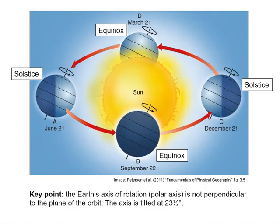This tilt means that different things are happening at different locations at different times of the year. For example, at the solstices, one pole points towards the sun at 23 and a half degrees while the other pole points away from the sun. At the equinoxes, neither pole is pointing towards or away from the sun. You can imagine that at the equinoxes the pole is tilting sideways to the sun rather than towards it or away from it.